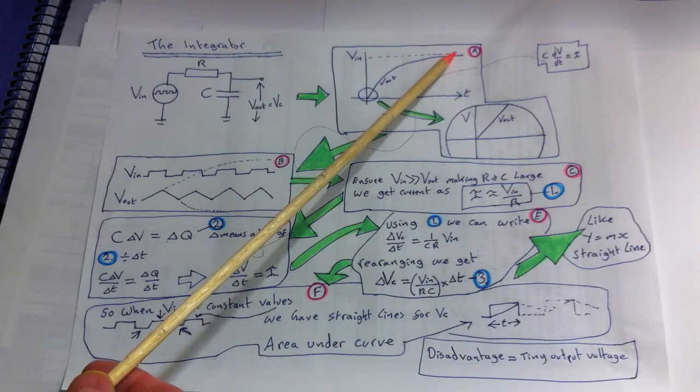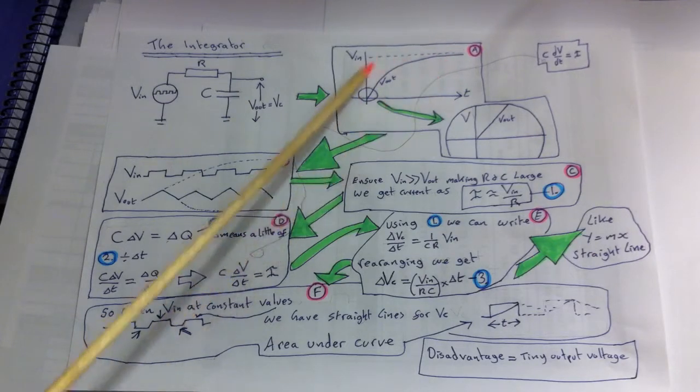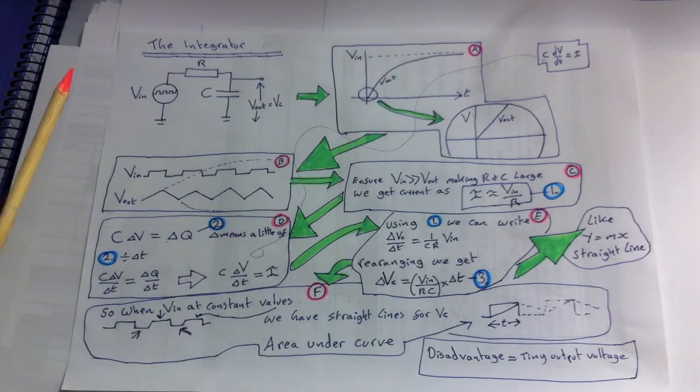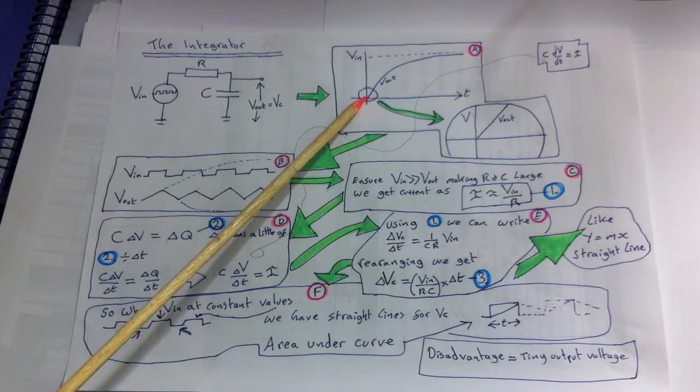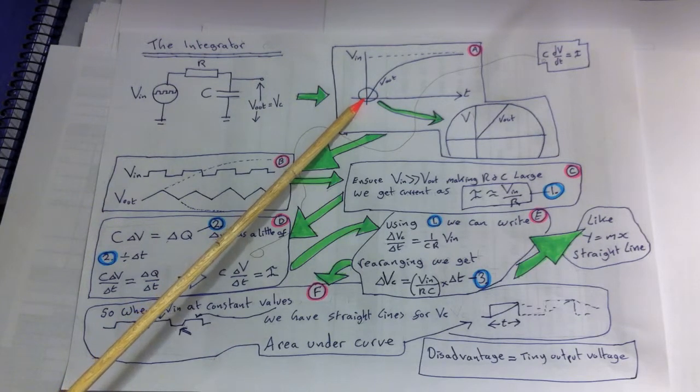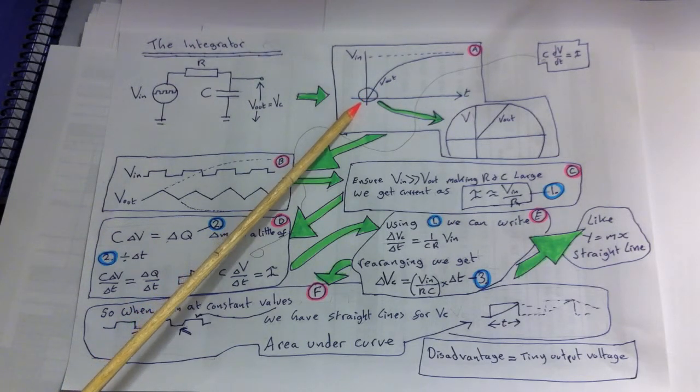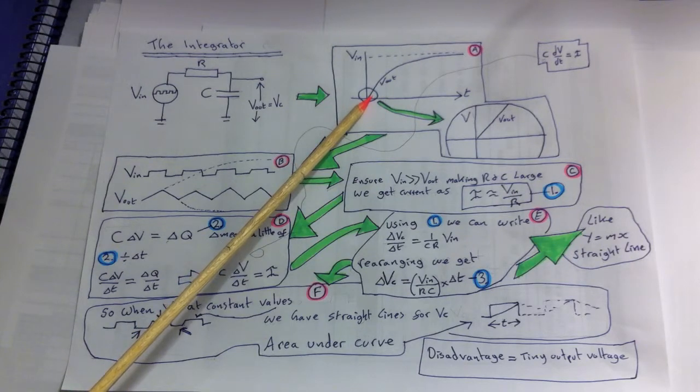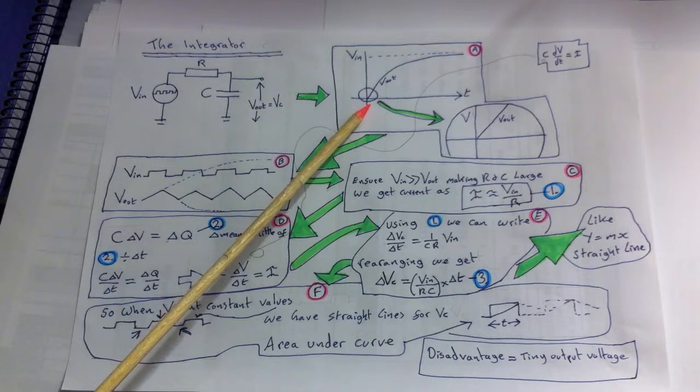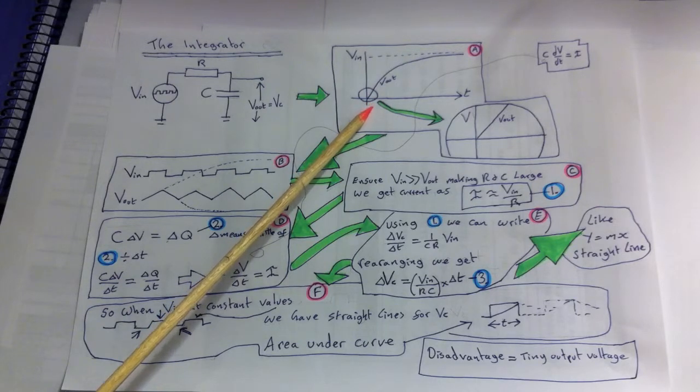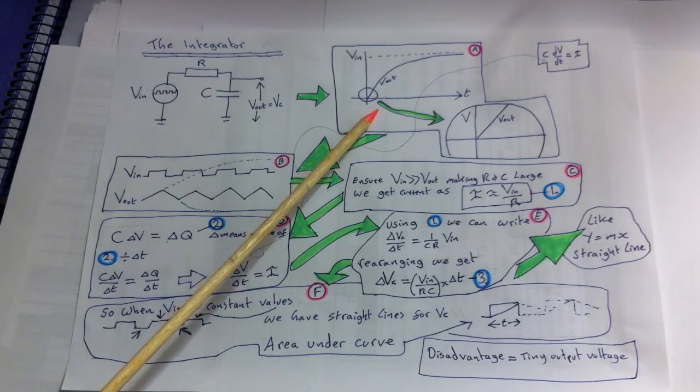So we get something that when plotted looks like this sketch. Now the section I have circled is indicating that here Vout is increasing at a fixed constant rate which is due to charges accumulating at a fixed constant rate, for example, a constant current.